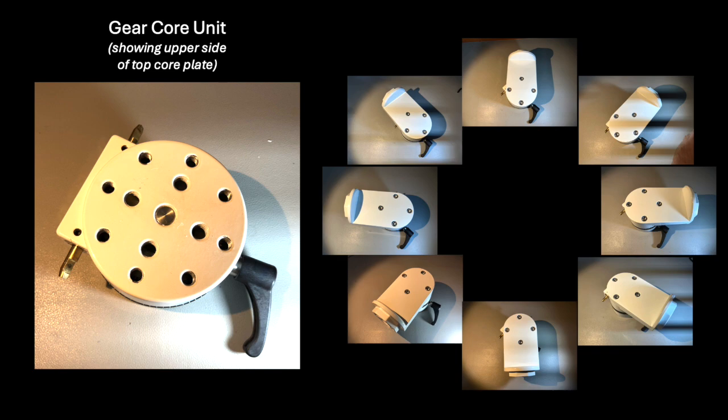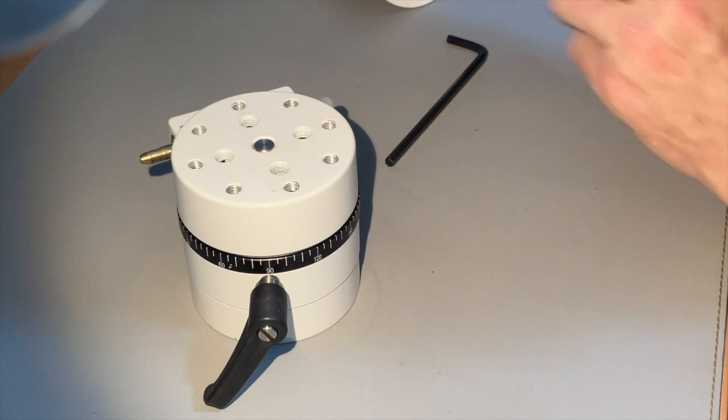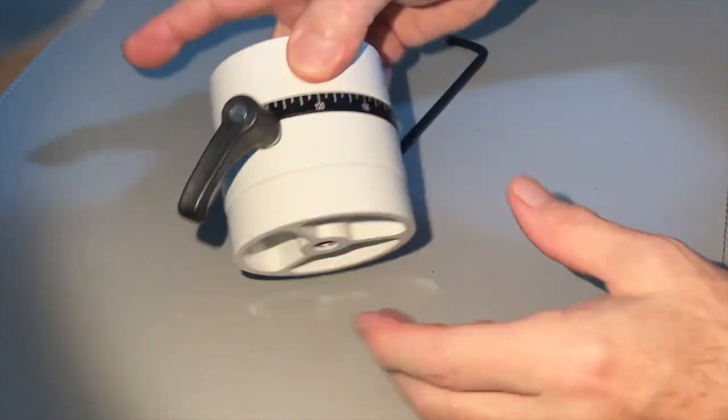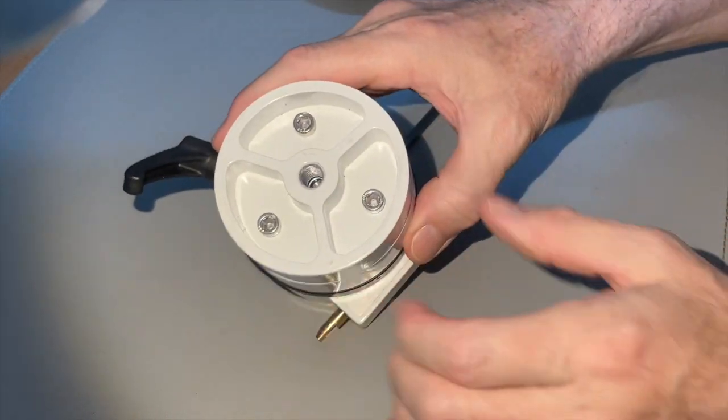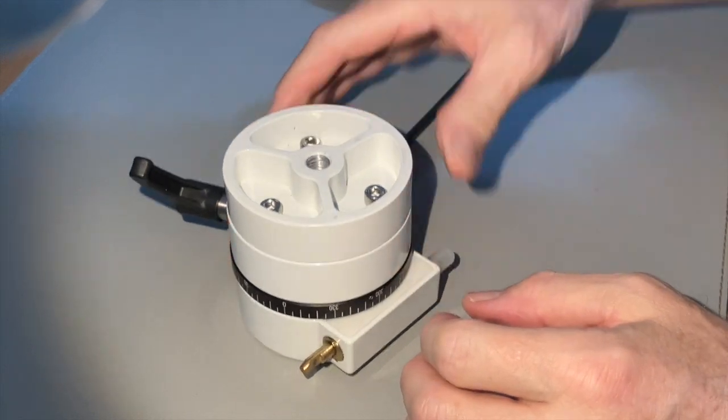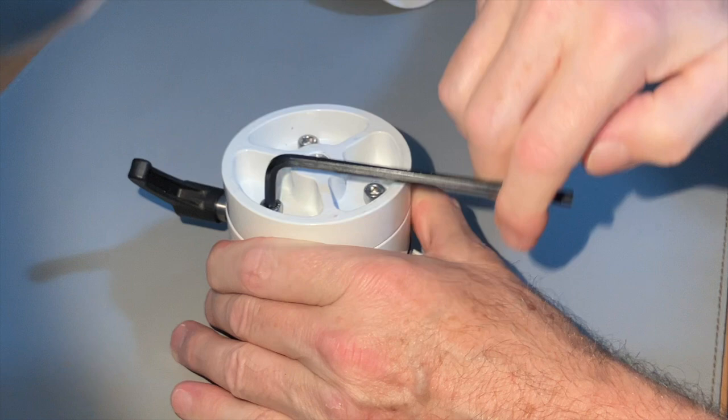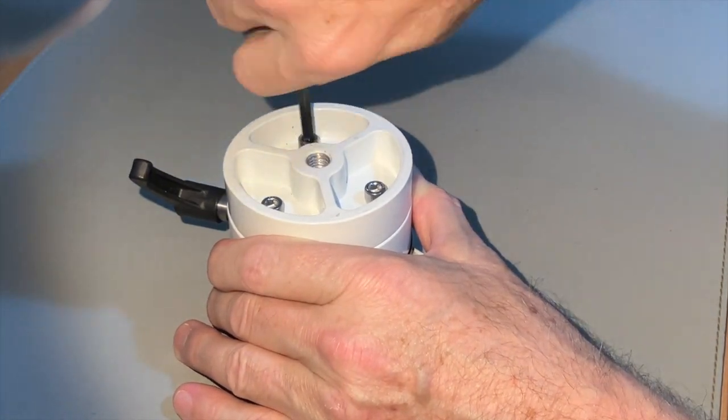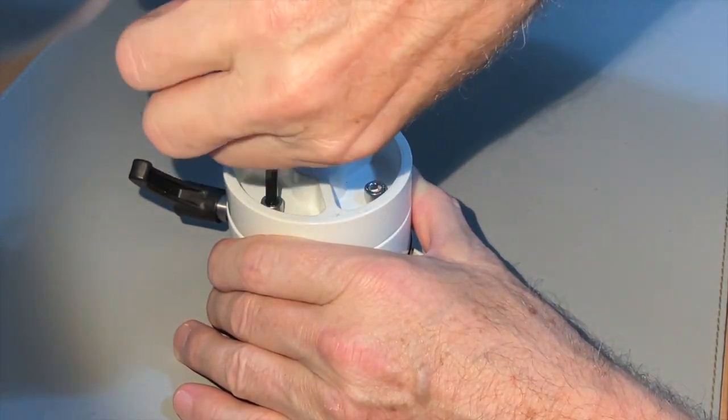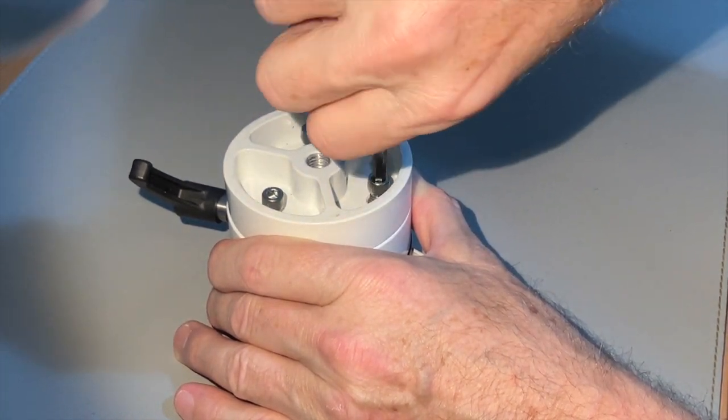But personally, I like the default factory set position the best. If you flip this gear core assembly over, you can see three more screws on the underside of the unit. Using the same 3/16 inch allen wrench, it is possible to separate the tripod base plate from the bottom core plate too.